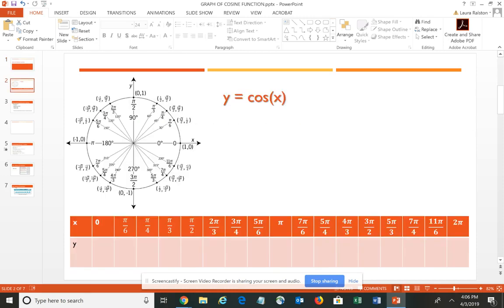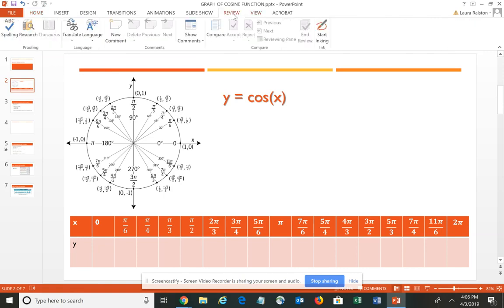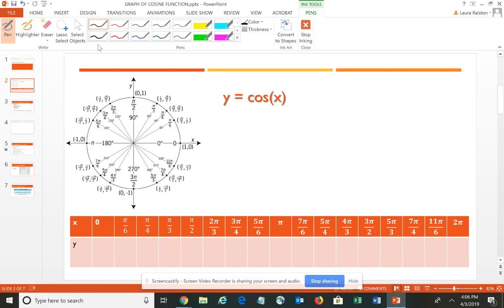So the function we would write Y equals the cosine of X, where X is our input and is actually an angle measure. You could also see it written – remember that you can write this same thing as F of X equals the cosine of X. We learned earlier in algebra that Y and F of X represent the same thing.